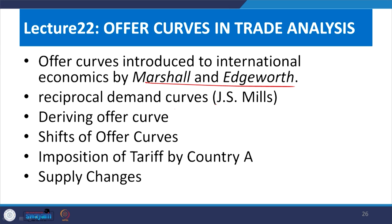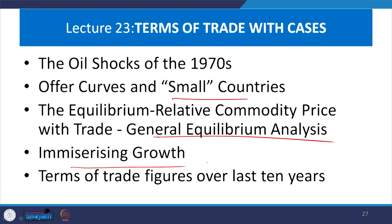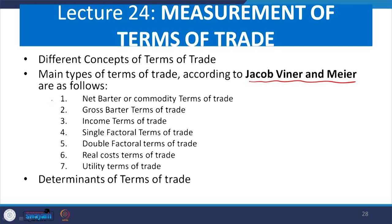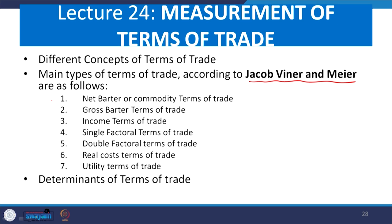Offer curve in trade analysis was also emphasized separately in lecture number 22, where we discussed the Marshall-Edgeworth box diagram and how to derive the reciprocal demand curve as mentioned by J.S. Mill. In lecture number 23, we referred to oil shocks and their impact on terms of trade, the small country context, general equilibrium context, and immiserizing growth rate. Various instruments developed by Jacob Viner and Meier were used to measure terms of trade, with different approaches mentioned by Meier.